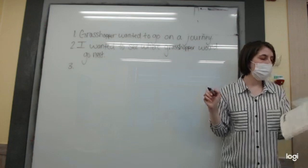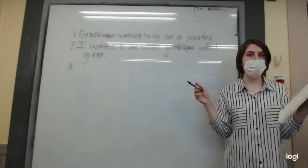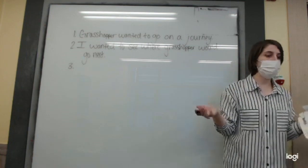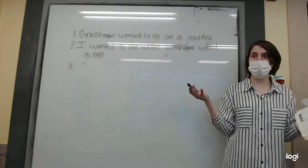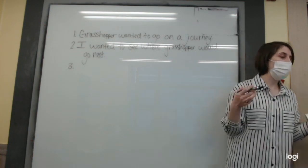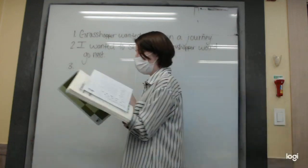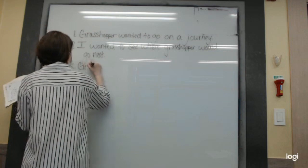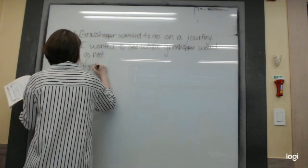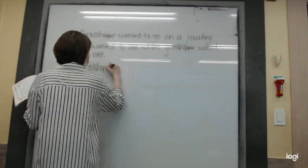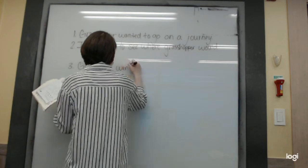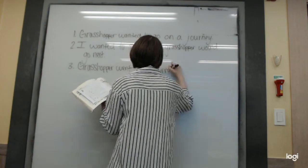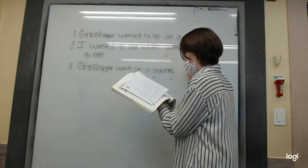So, now we are going to retell the story using our own words. We want to basically do this how we do a book report. So, what happened first? Well, Sun already said, Grasshopper went on a journey. Right? So, first we are going to say, Grasshopper went on a journey. Okay?